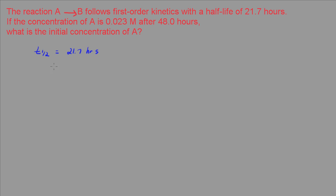The first thing I need to do, I'm not given K here, so we know that K is equal to 0.693 divided by the half-life. Let's go ahead and determine what K is. 0.693 divided by the half-life, which is 21.7 hours, that's going to give us 0.0319 per hour.